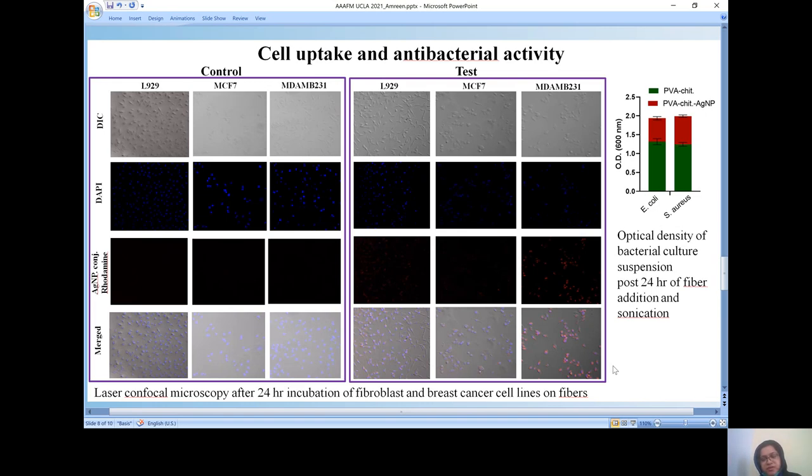The antibacterial activity was further confirmed by taking the optical density readings after 24 hours of fiber addition. In order to detach the bacterial cells from the fiber, we even sonicated it for 10 minutes. Further analysis shows that after addition of AgNP in both E. coli and S. aureus bacterial strains, there was a decrease in the OD when taken at 600 nanometers.